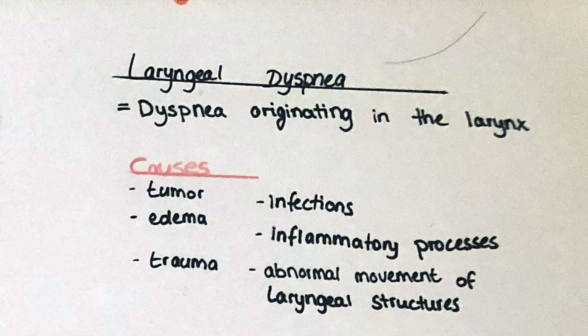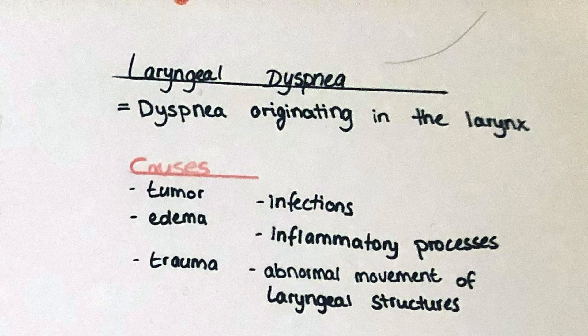The second topic is laryngeal dyspnea. This is a dyspnea originating in the larynx and it may occur due to obstruction by a tumor, edema, infections, inflammatory processes, trauma, or also abnormal movement of the laryngeal structures, such as if the vocal cords are absent or if there's a laryngospasm.